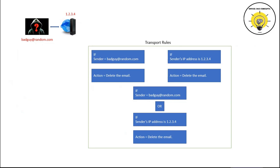If we use the AND operator in the same scenario, then both conditions must match. If one of the conditions fails, the mail flow rule will not trigger on that particular email.